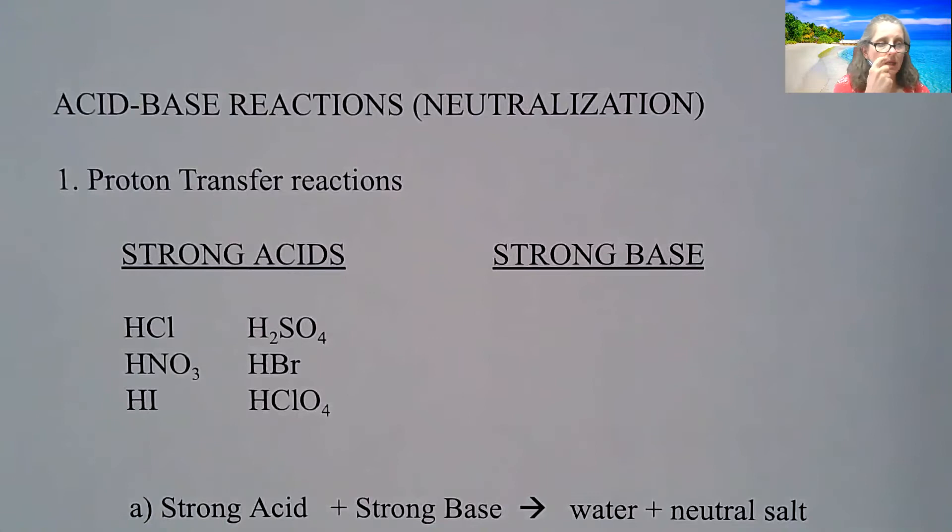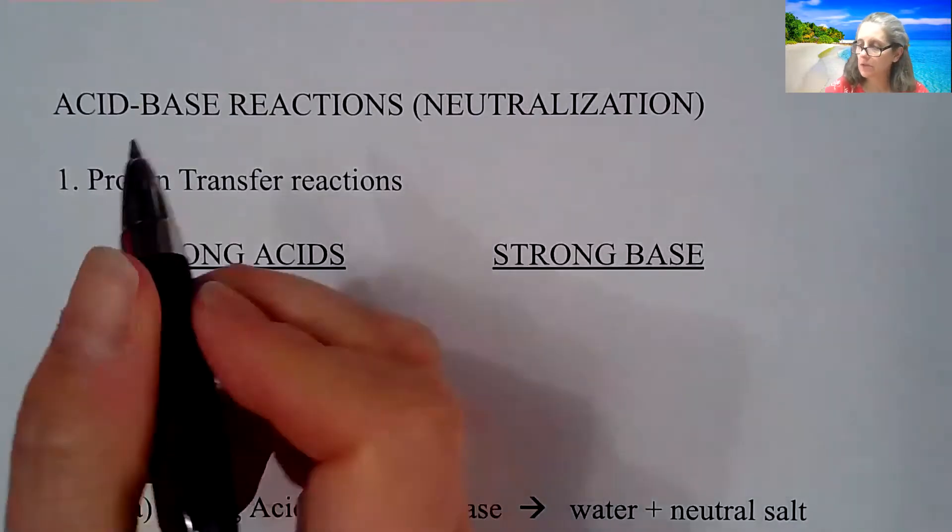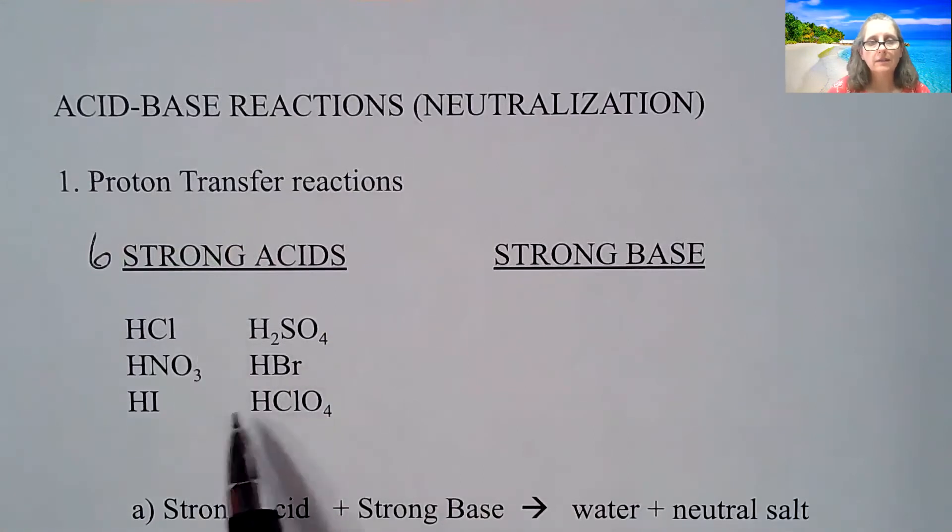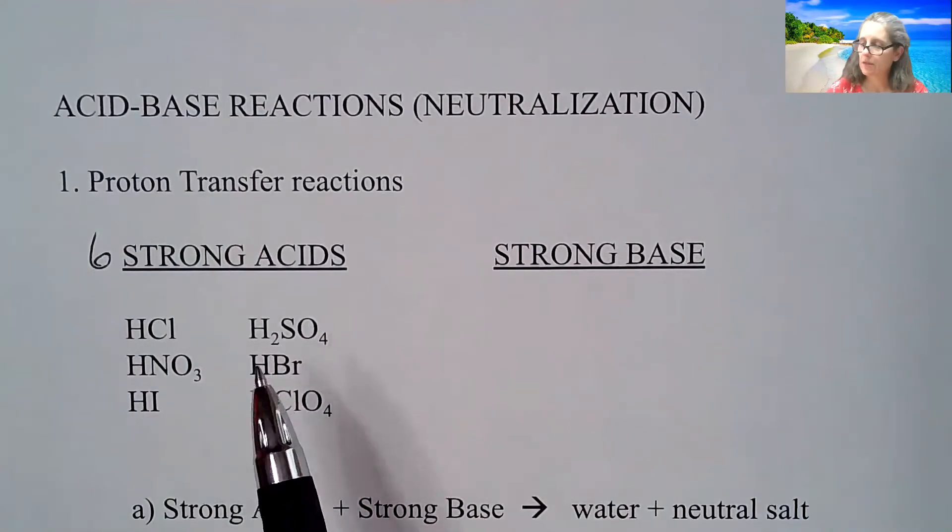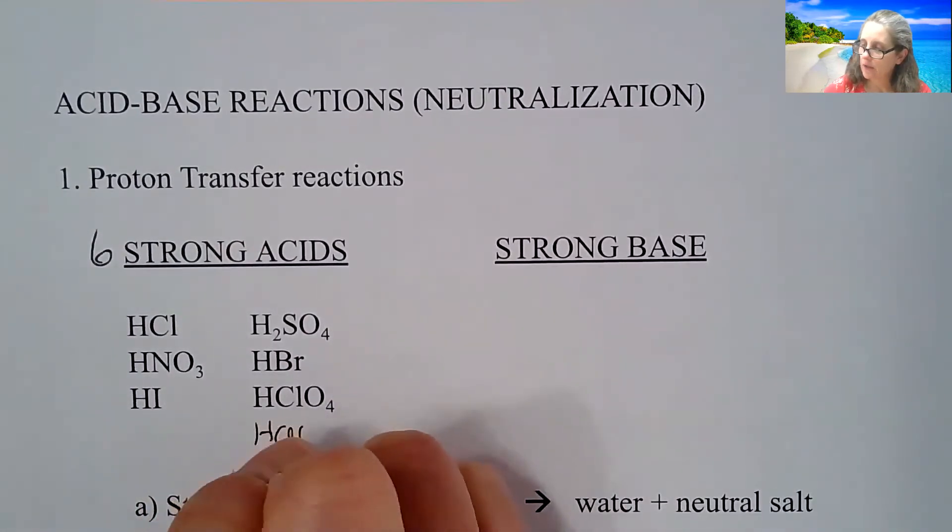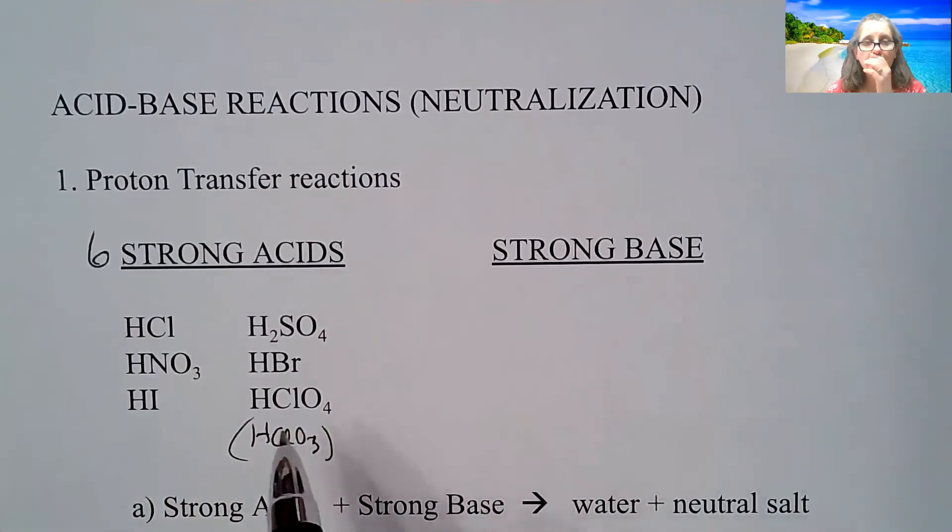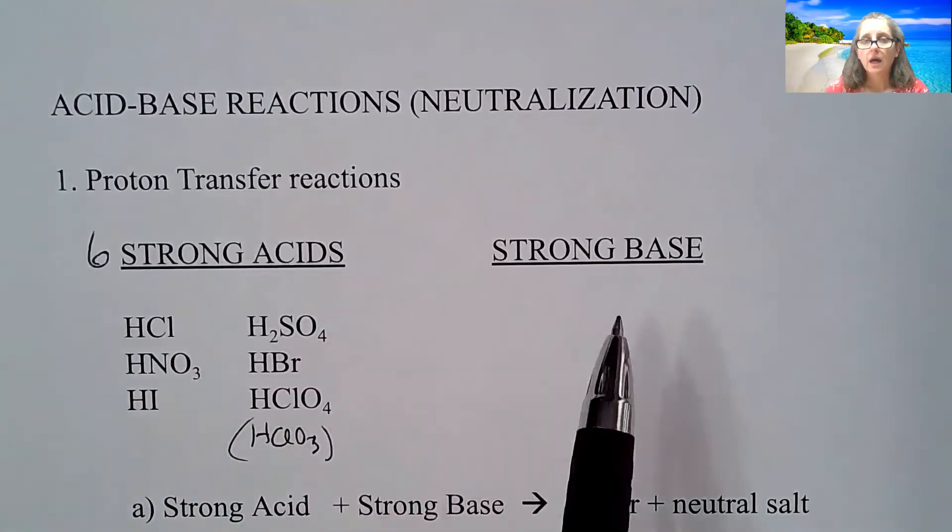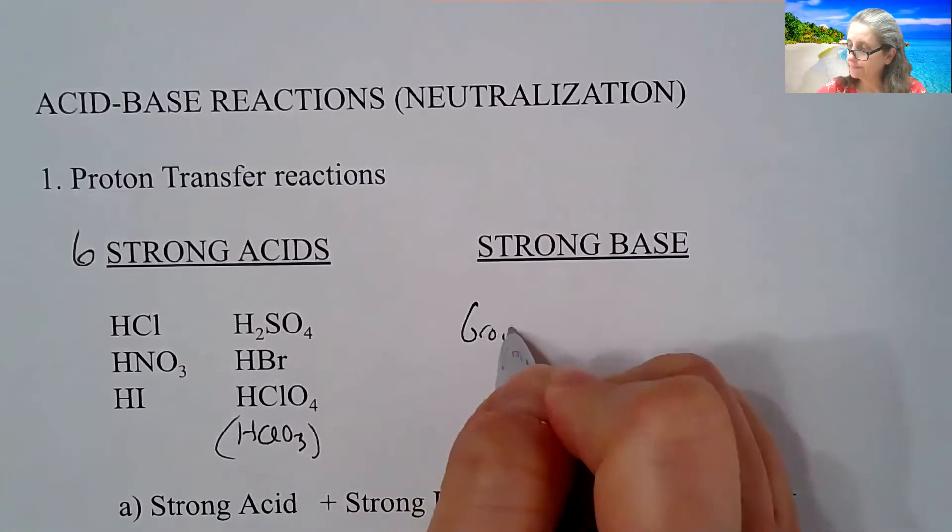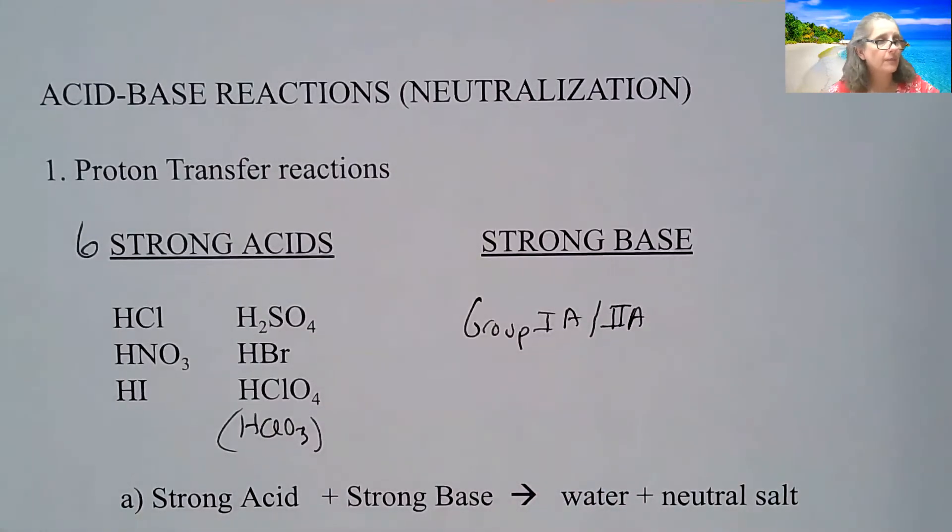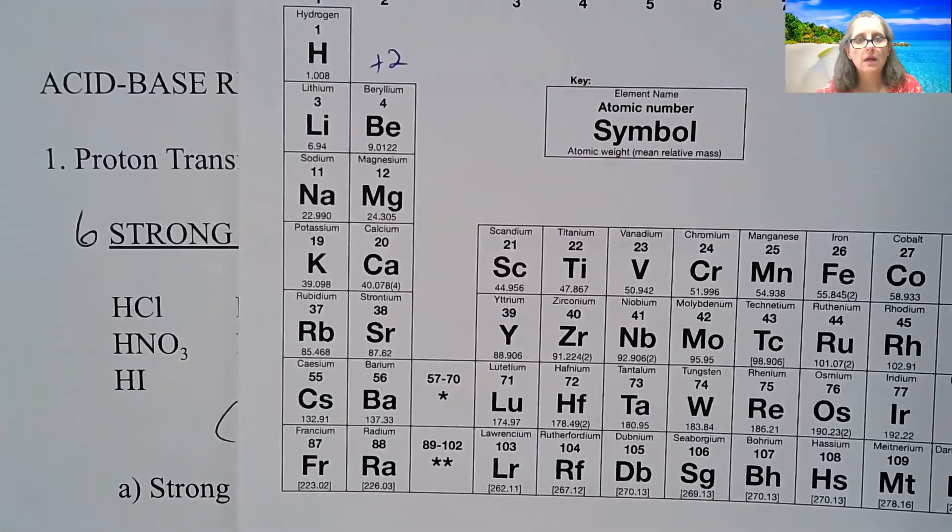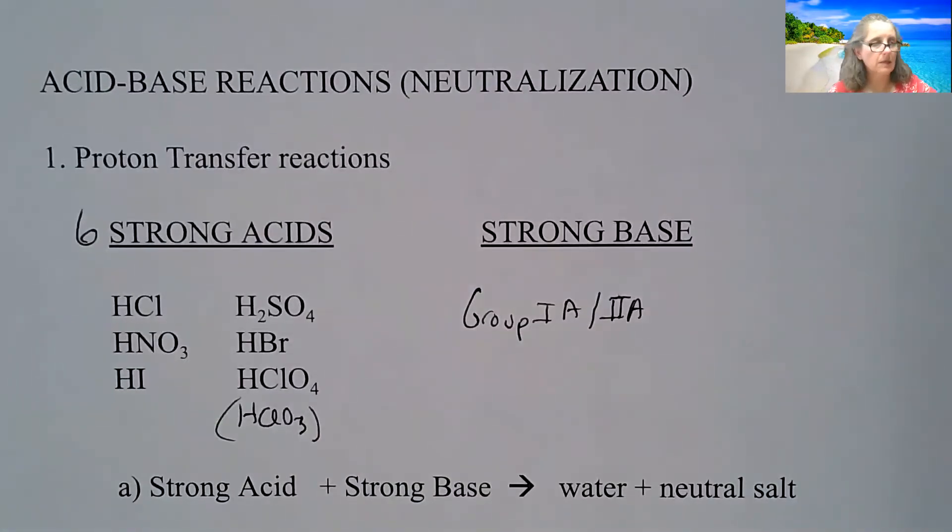So this is a proton transfer. You do need to know the six strong acids, and they are listed here. These are the only ones that the AP recognizes as a strong acid. You sometimes see HClO3 listed in some resources, but the AP just wants you to know six of them. Strong bases are group 1A and 2A OHs. So anything from the first two columns on the periodic table, any of those elements attached to OH are considered a strong base.